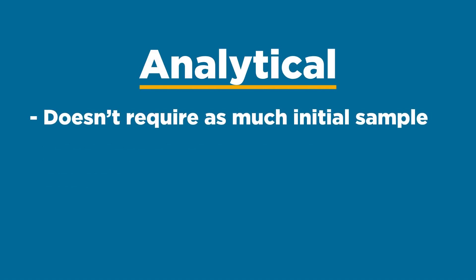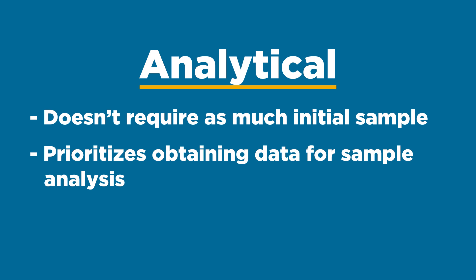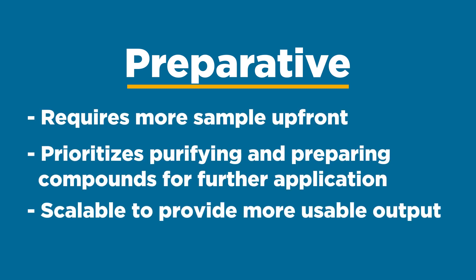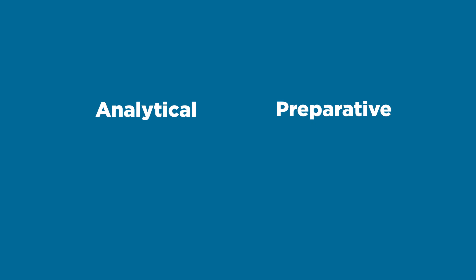Now let's tie it all together. Put simply, if you only have a small amount of sample and just need to know something's makeup, you can use analytical chromatography to analyze the sample. On the other hand, if you want to have an output that's usable and scalable, and you have a lot of sample available, you can use preparative chromatography to separate out the desired compound, and use it for whatever application you need. Both analytical and preparative chromatography take into consideration how much compound the user wants to separate out.